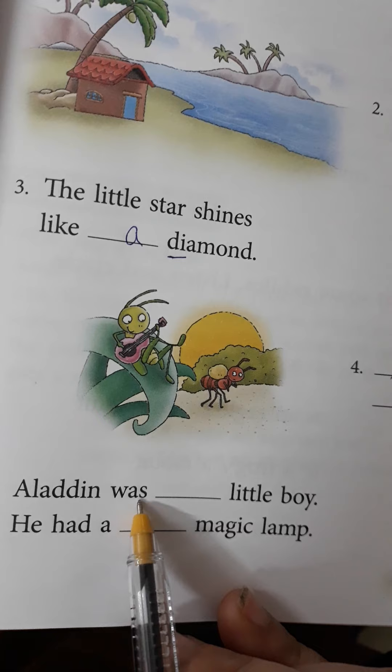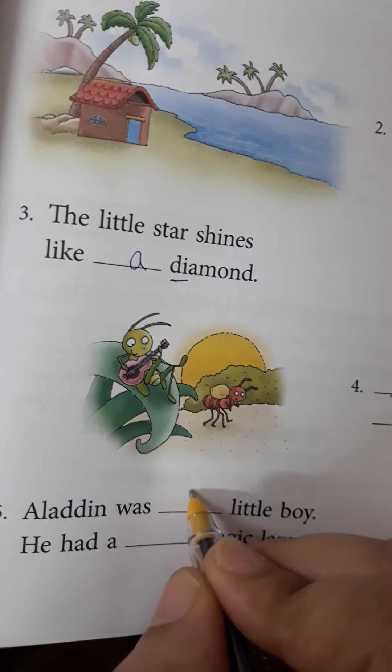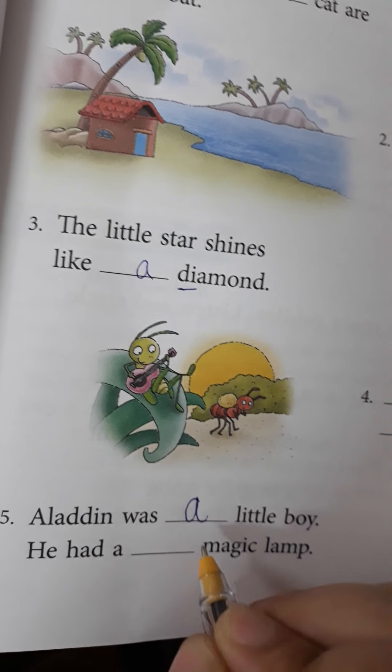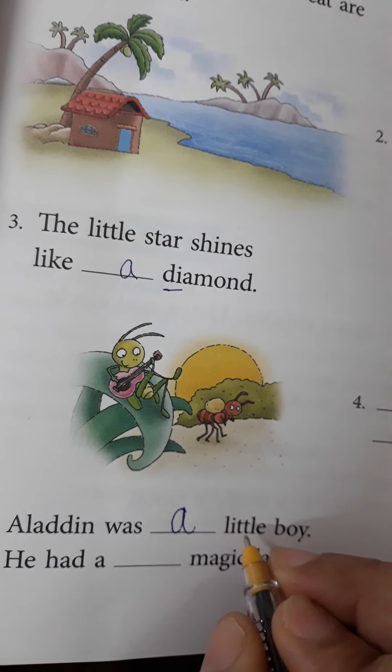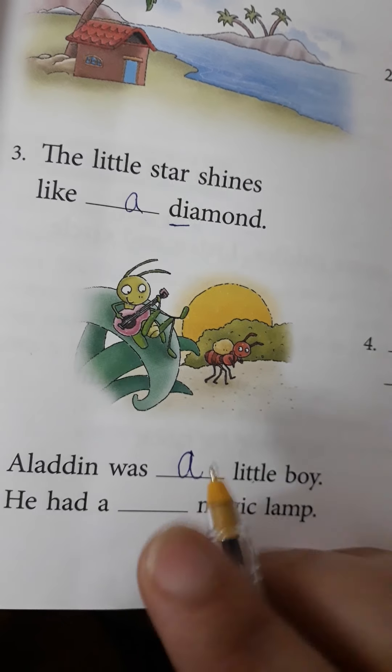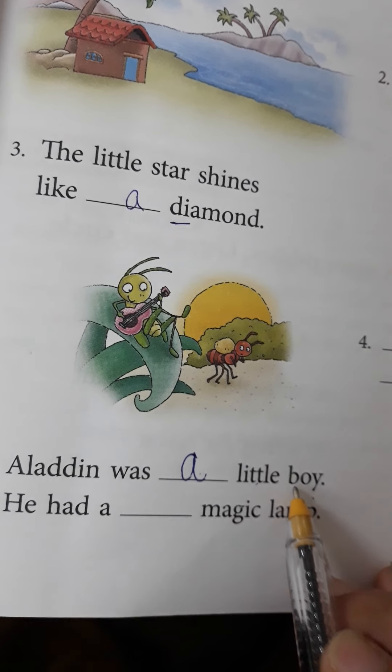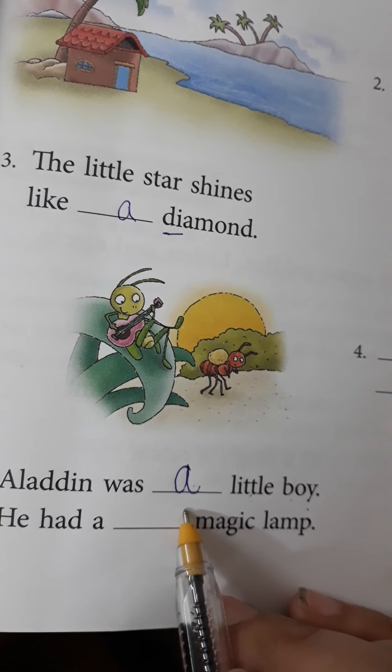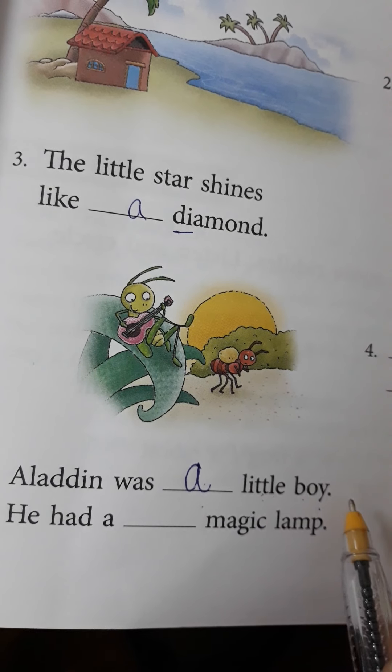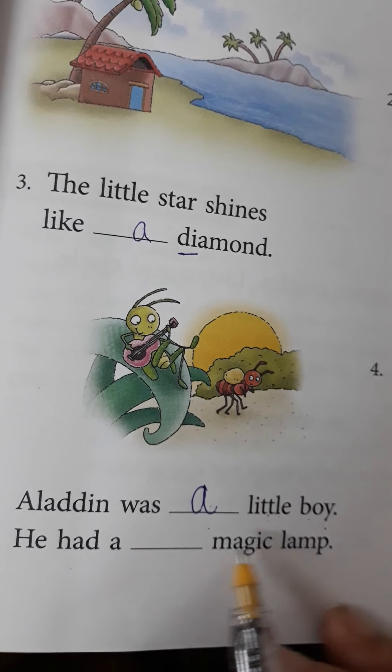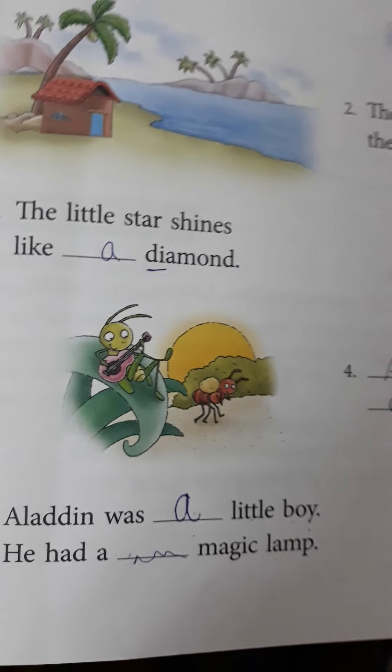Aladdin was dash little boy. Little boy. So, A. Aladdin was a little boy. Now, here little is not the noun. This A represents this boy. Okay. So, because little has come here, A will come here. Aladdin was a little boy. He had a magic lamp. A is already written. So, nothing will come here. Okay.